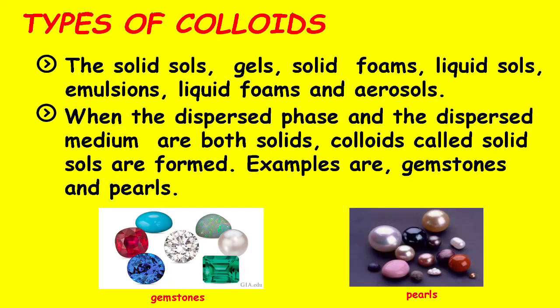Now let's have the types of colloids. The types of colloids are solid sols, gels, solid foams, liquid sols, emulsions, liquid foams, and aerosols. When the dispersed phase and the dispersion medium are both solids, colloids called solid sols are formed. Examples are gemstones and pearls.